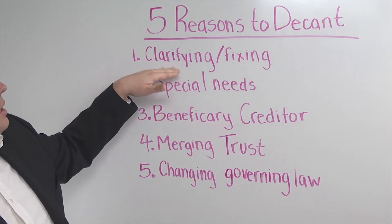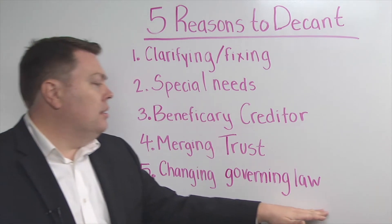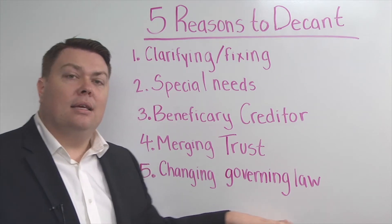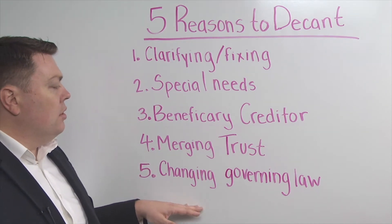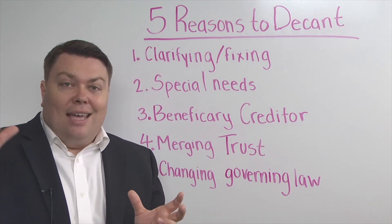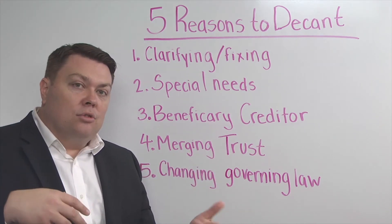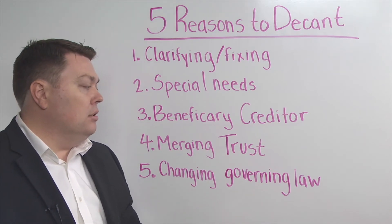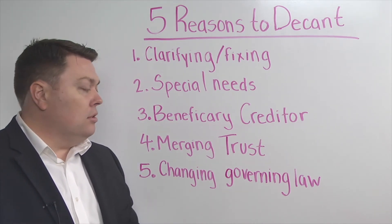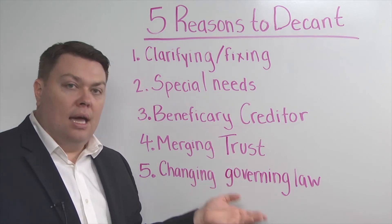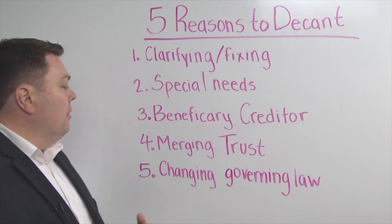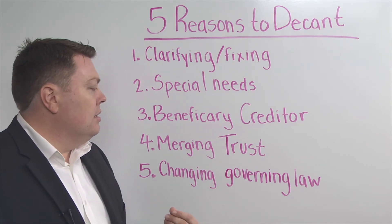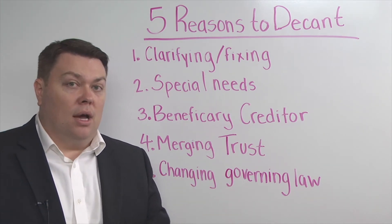Fifth, we have changing governing law. As we touched on earlier, when the laws change, the terms of an old trust may not operate exactly the way you would want. So you can take that old trust, pour all the assets into a new trust — decant it — so that it works the way the original trustors, those original grantors who created the trust, actually wanted the assets to be passed.